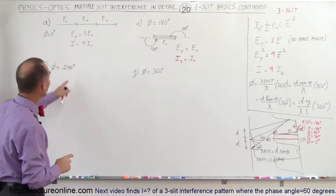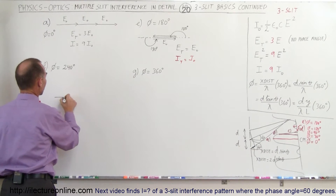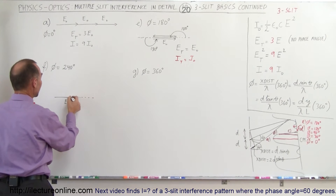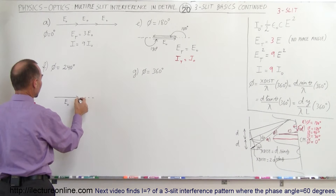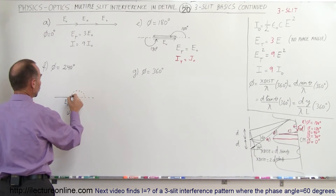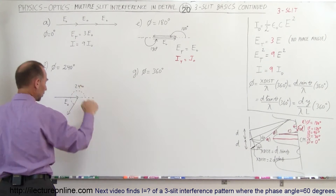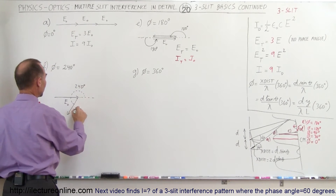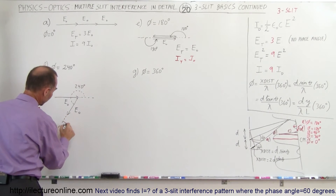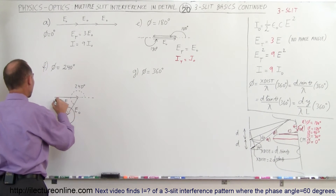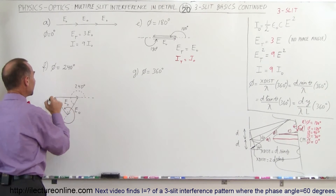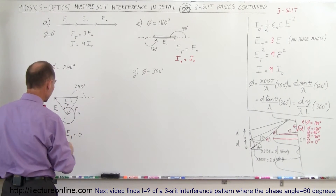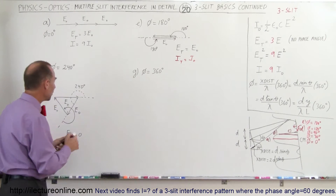What happens when the phase angle is 240 degrees? The first ray is E sub not. A 240 degree phase shift is 180 plus another 60 degrees, placing the second ray in that direction. Then another 240 degree shift gives us the third ray. Vectorially adding them all up, E total equals zero — therefore the intensity also equals zero when we have a 240 degree phase shift.